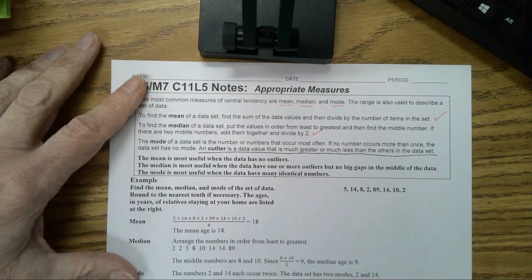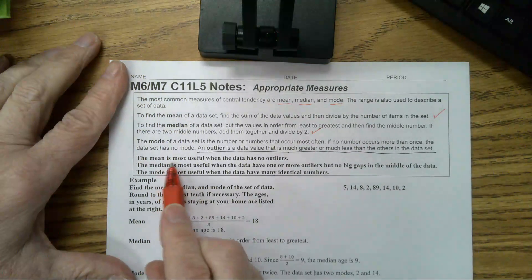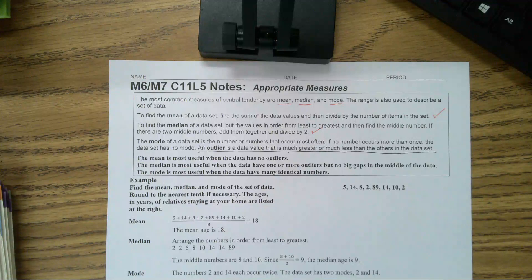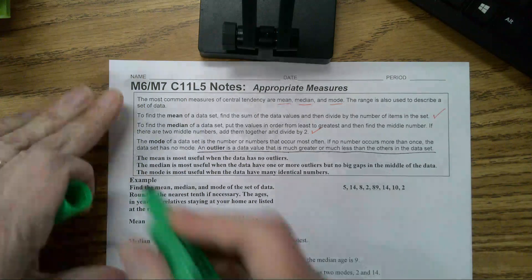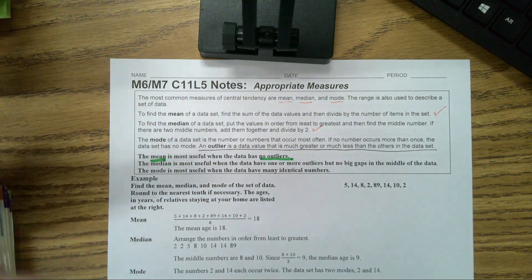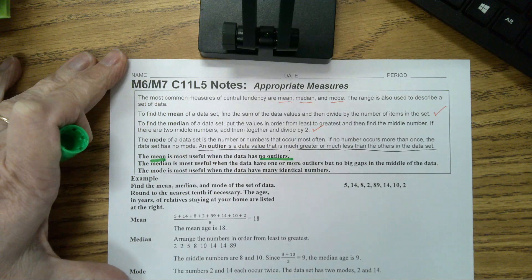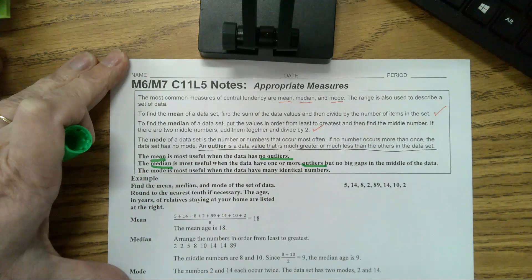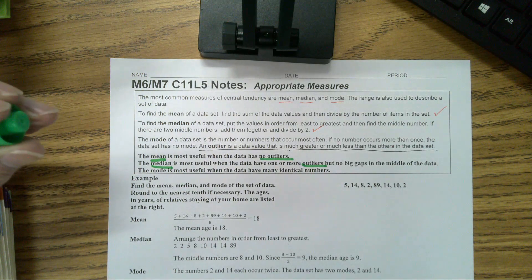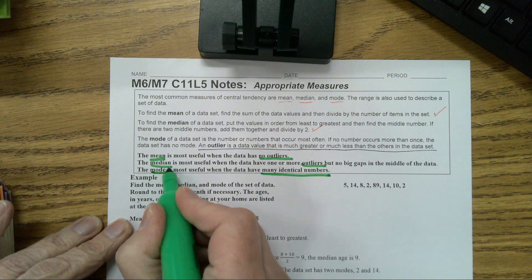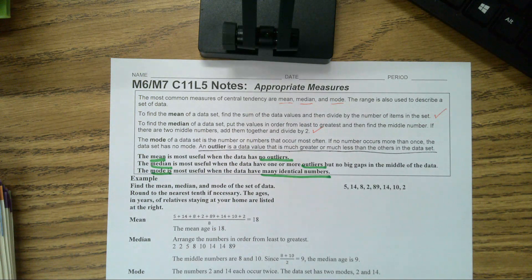When do you use the mean? The mean is most useful when the data has no outliers. So when you don't have an outlier in your data set, you're going to use the mean. When do you use the median? The median is most useful when the data have one or more outliers but no big gaps in the middle of the data — so when you have outliers, use the median. The mode is most useful when the data have many identical numbers.